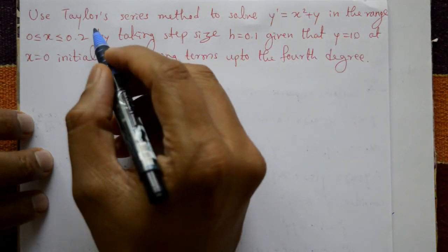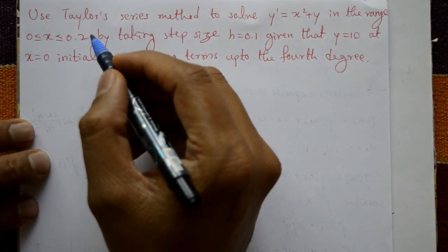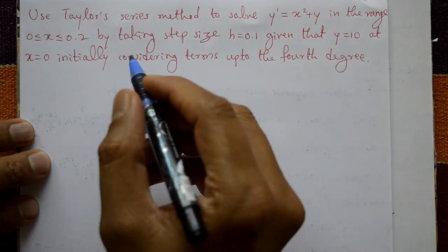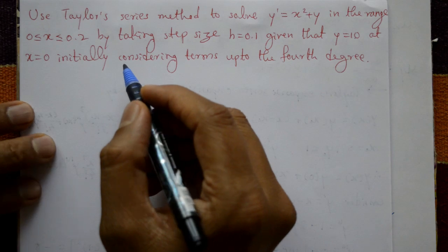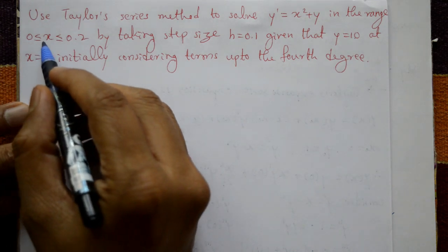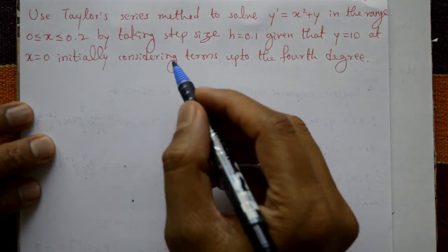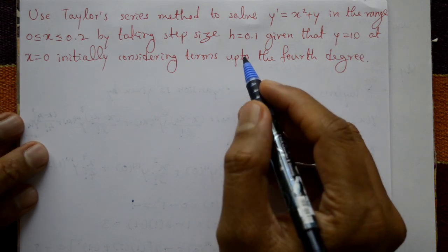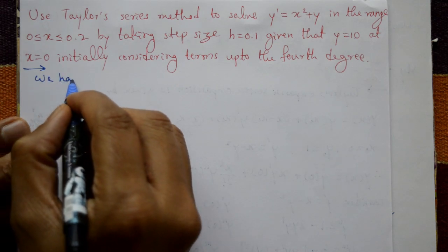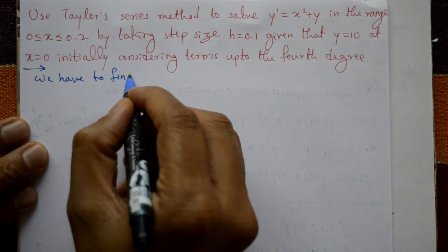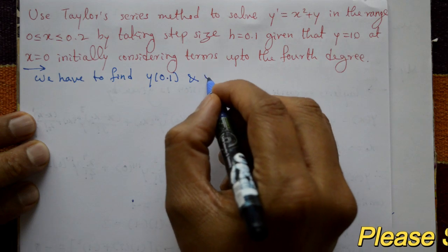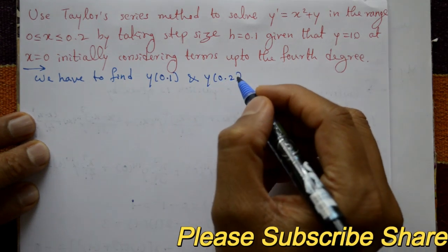In this problem, since the step size is specified as h = 0.1, the problem has to be done in two stages. The initial values are x₀ = 0 and y₀ = 10. First we have to find y(0.1) in the first stage, and the second stage is y(0.2).